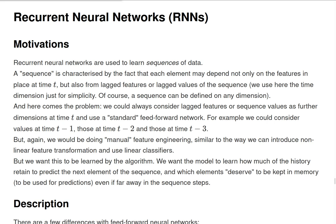And with this, use standard feedforward networks that we already saw. For example, we could consider values at times t-1, t-2, t-3, and so on. However, if we do that, we'll do some sort of manual feature engineering. It's very similar to the way we did introduce nonlinear feature transformations and used linear classifiers under these transformed features.